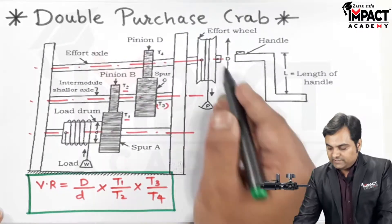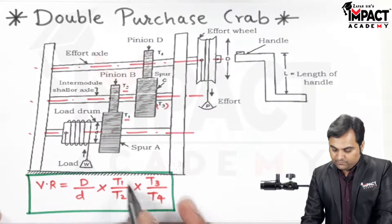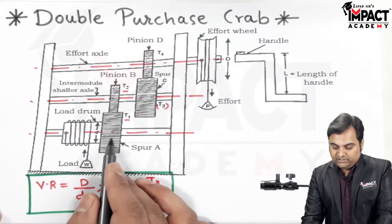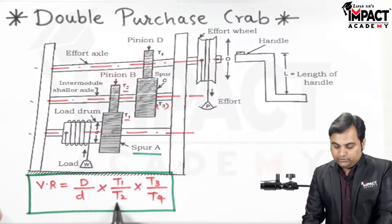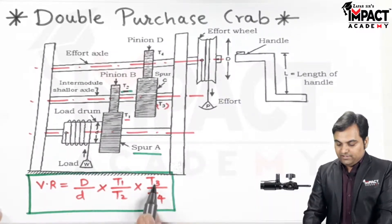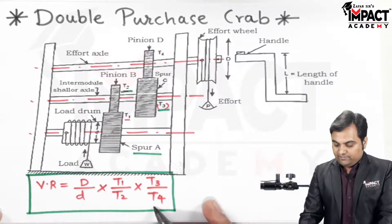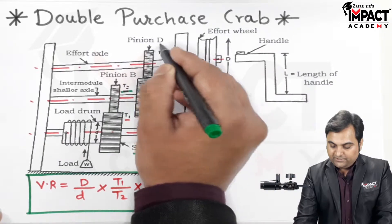Where capital D is the diameter of the effort wheel, small d is the diameter of the load drum, t1 is the number of teeth on spur A, t2 is the number of teeth on pinion B which is in mesh with A, t3 is the number of teeth on spur C, and t4 is the number of teeth on pinion D which is in mesh with C.